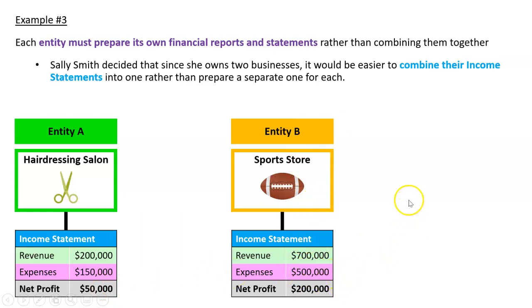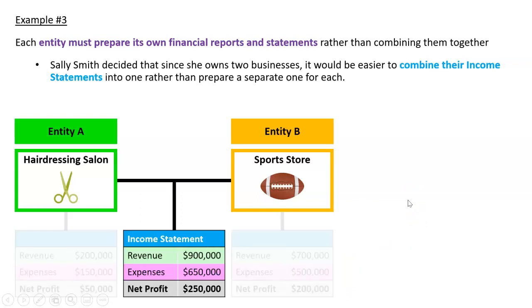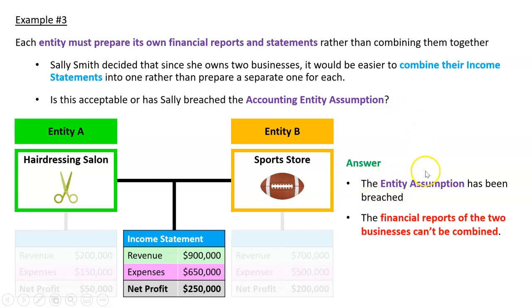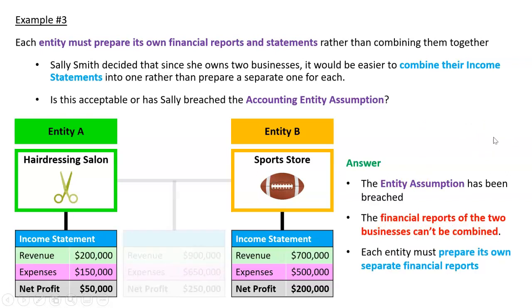Sally says she owns both of them, so she's going to combine them into one giant income statement. Is that acceptable? No — she has breached the entity assumption, because the financial reports of the two businesses can't be combined. Their financial records are separate. What she should do is prepare an individual set of financial reports for each entity; they cannot be combined.